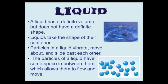But liquids are different because they don't have the same shape. Liquids take on the shape of their container. If the water is in a vase, it takes on the shape of a vase. If it's in a teacup, it takes on the shape of the teacup. Now, particles in a liquid will vibrate and move a little bit, and they slide past each other much more than they do in a solid. There's some space in between the particles too, which allows them to flow and to move.